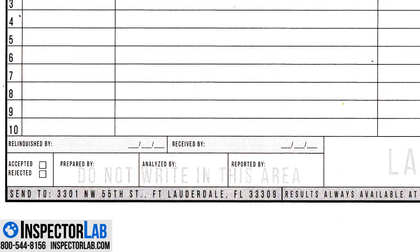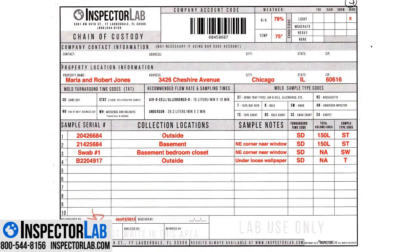After all the collected samples have been documented and detailed, don't forget to sign and date the chain of custody on the bottom in the section labeled 'Relinquished By.' This is what a completed chain of custody should look like. An informational chain of custody was provided to you in your getting started email, but it is also available on the Inspector Lab resources frequently asked questions page.